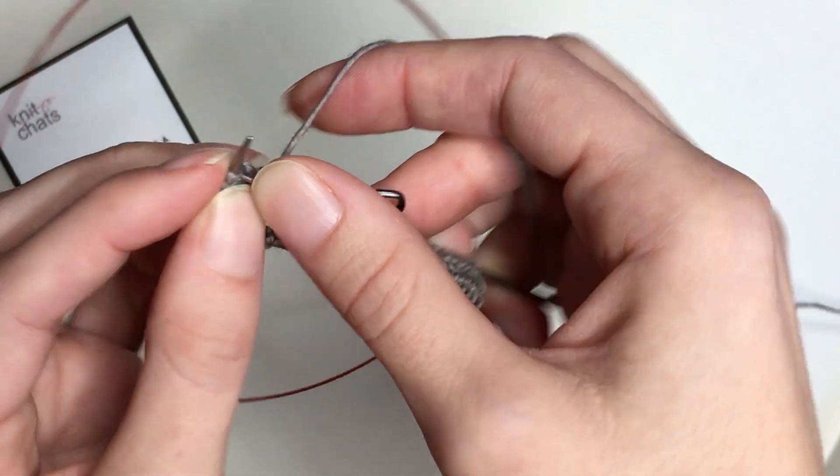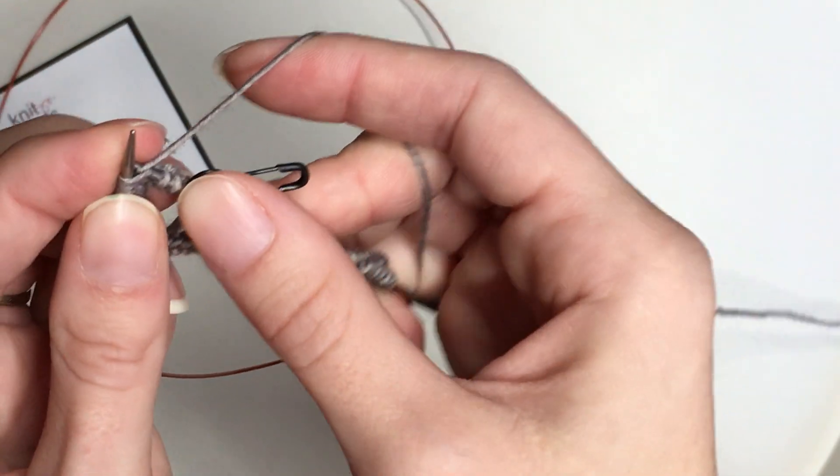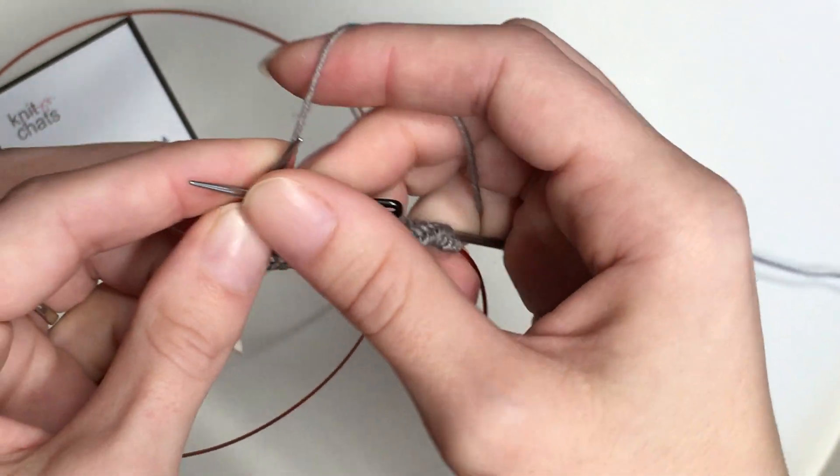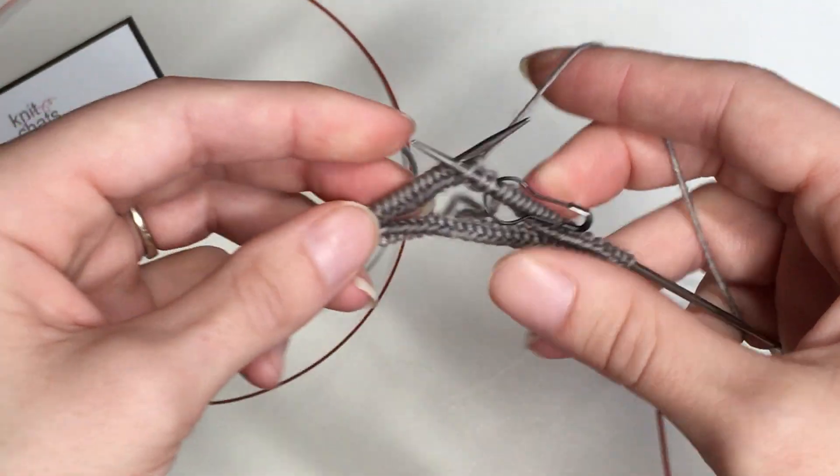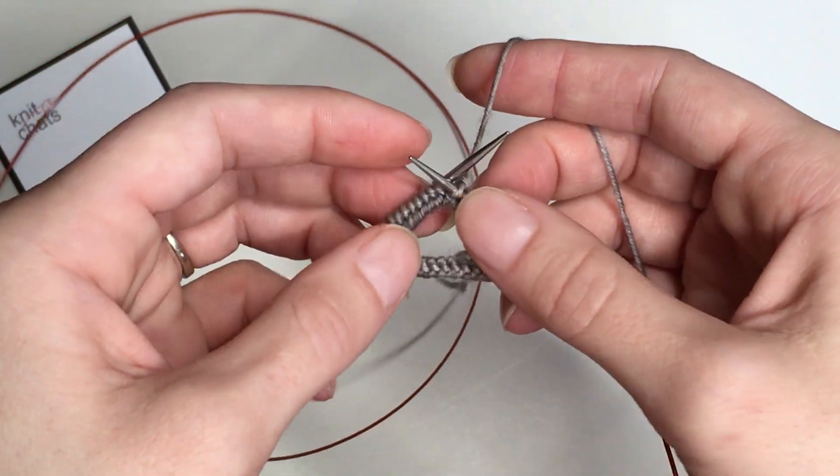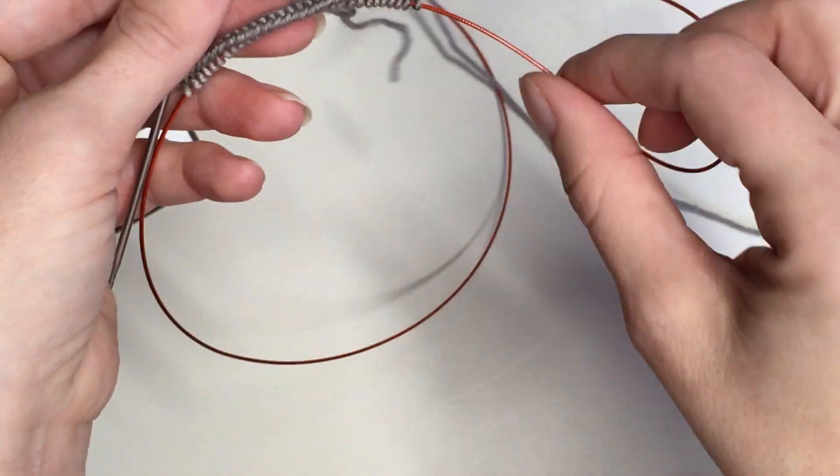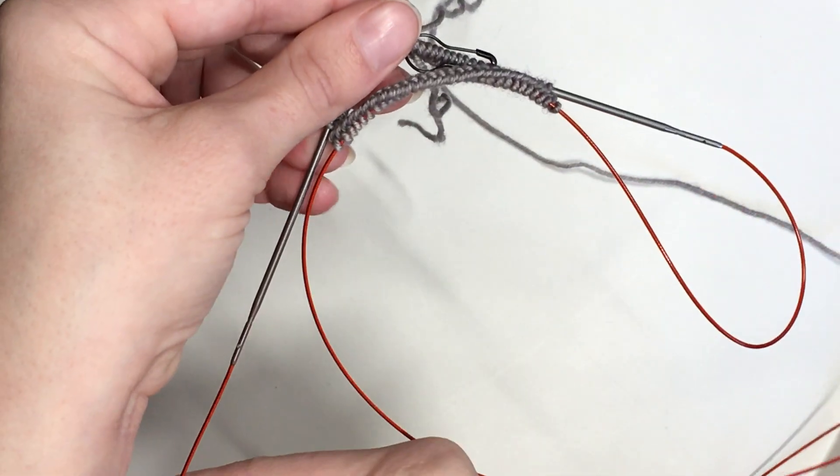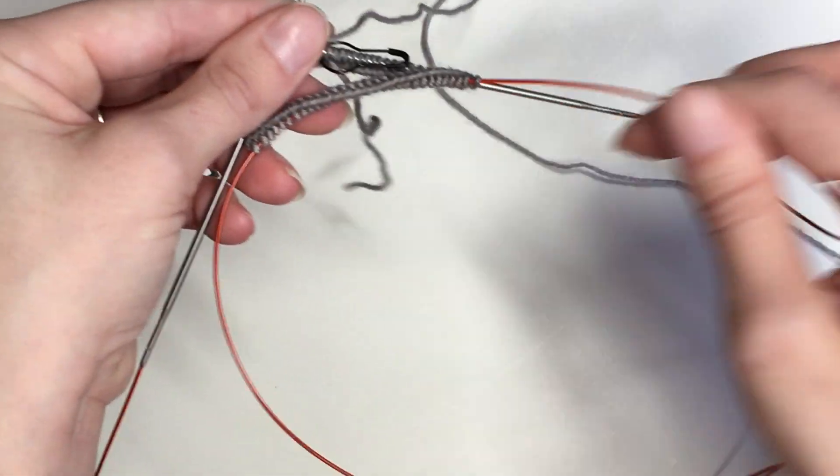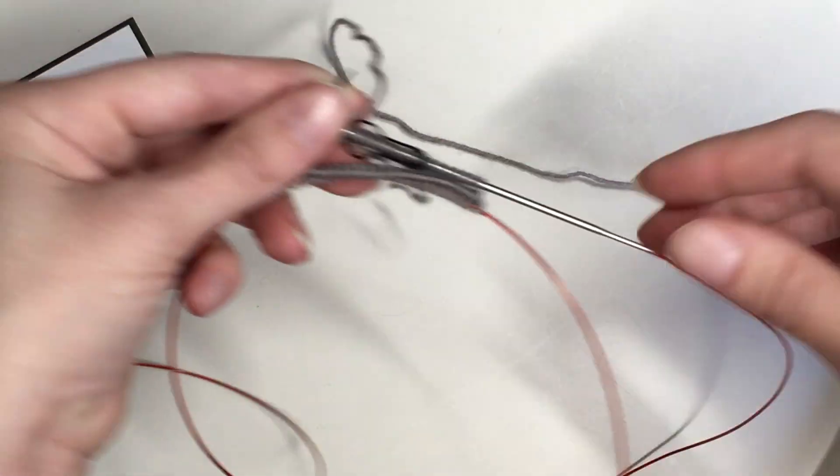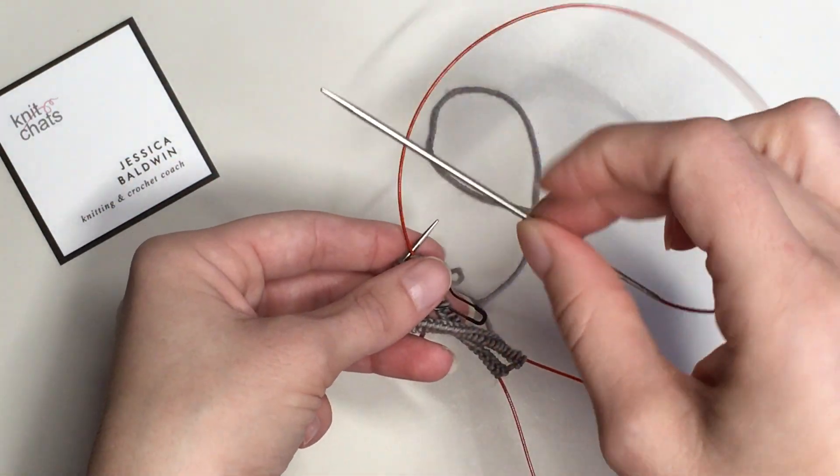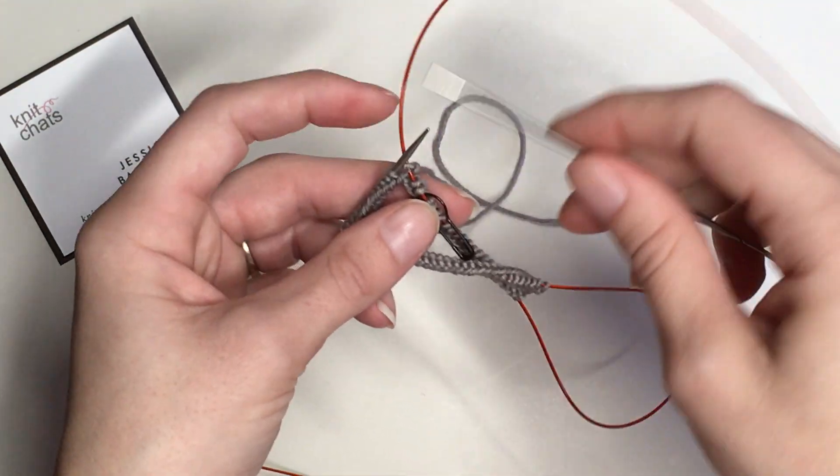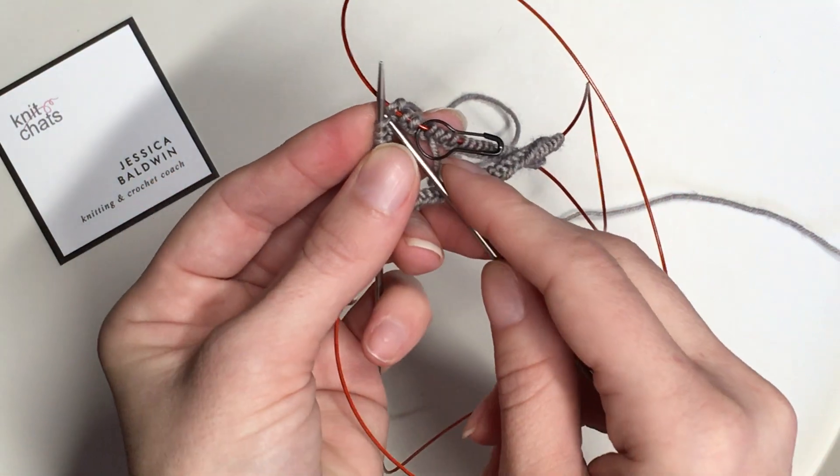If it helps you to cast on on one size larger needles than the size that you're going to use for the knitting of the sock so that you can knit your first row, that's great. I've knit my first three stitches. I have my first needle and I have all this cord. I'm going to pull the cord so that there's less cord over here and more over here. And then I'm going to push this needle through so that basically I have an empty needle now because it's all on the cord. And now I'm going to continue knitting.